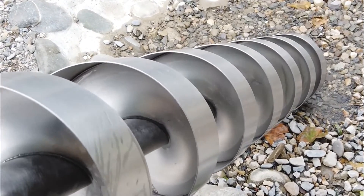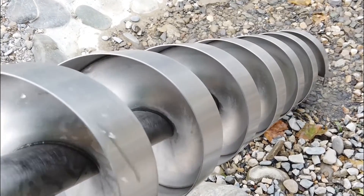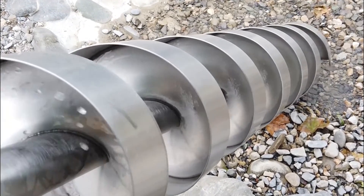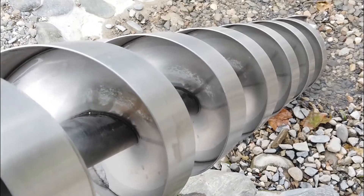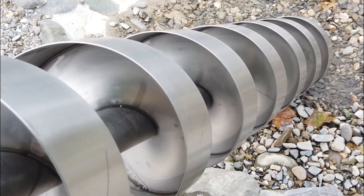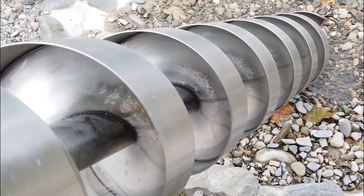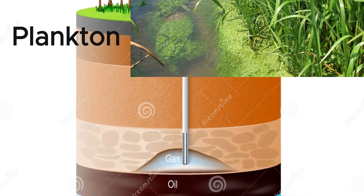For oil and gas to be commercially viable, they must accumulate in significant quantities in a reservoir rock and be trapped by a cap rock. These trapped hydrocarbons form an oil reservoir. The geological structures that trap oil and gas include anticlines — upward-arching folds of rock layers — fault traps created by the movement of rock along a fault line, and salt domes, large bulbous masses of salt that deform surrounding rock layers.